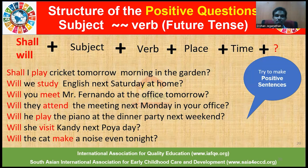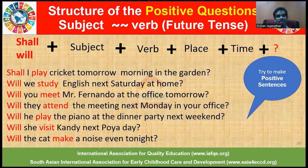Here are some examples for further understanding. Shall I play cricket tomorrow morning in the garden? The question begins with shall, followed by the subject I, and the verb is play. Will we study English next Saturday at home? The question begins with will, plus subject we, and the verb study. Will you meet Mr. Fernando at the office tomorrow? Will they attend the meeting next Monday in your office? Will he play the piano at the dinner party next weekend? Will she visit Kandy next holiday? Will the cat make a noise even tonight?